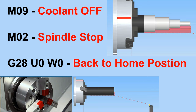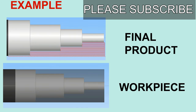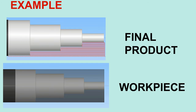At last, we want to stop our program and bring it back to the starting point. We use M30 for that, and this is where the program ends and we are ready to start our production. Please keep watching the video. Let us take an example so that we can get more clarity.